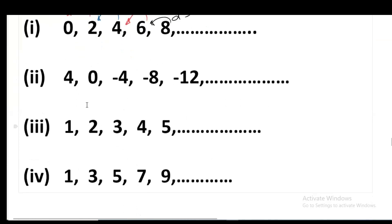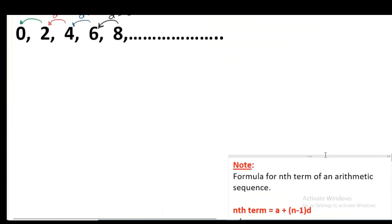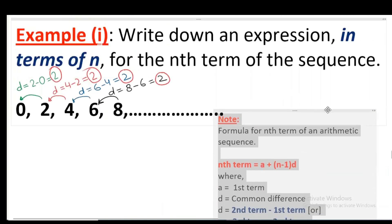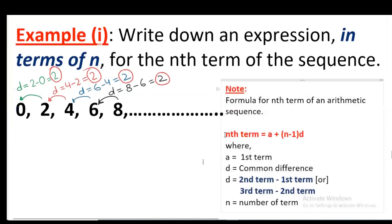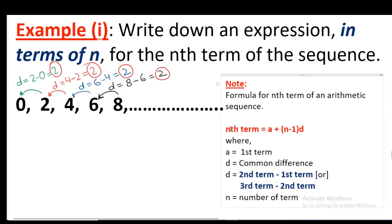You can find common differences between the second and third, or third and fourth parts. When common differences are all the same, the sequence is an arithmetic sequence and you have to use the formula to find the Nth term. The formula is: Nth term equals A plus (N minus 1) times D, where A is the first term and D is the common difference. When common differences are the same, you should apply this formula.